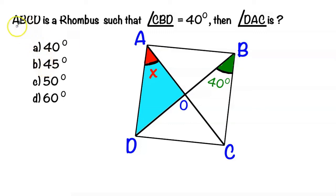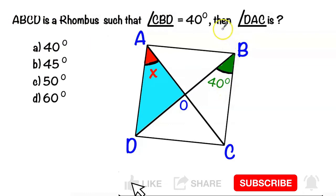Hi all, it's Super Easy Math. Given that ABCD is a rhombus such that angle CBD is 40 degrees, we need to find angle DAC. Is it 40, 45, 50, or 60 degrees?